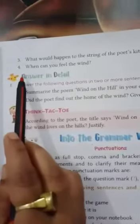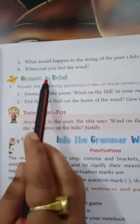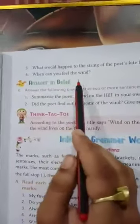Question number 2. Why could not the poet keep up with the wind? And question number 3. What would happen to the strings of the poet's kite if he stopped holding it? Question number 4. When can you feel the wind?